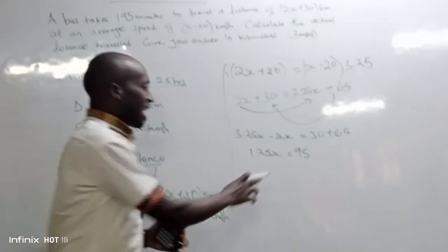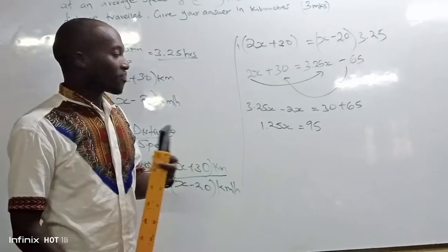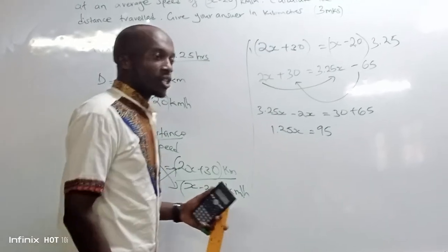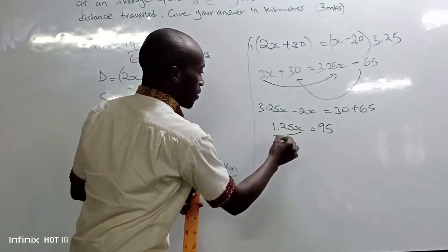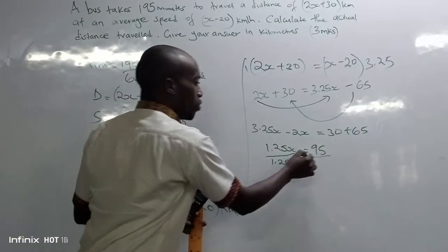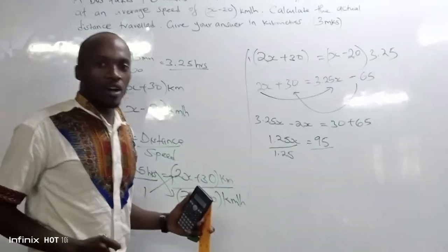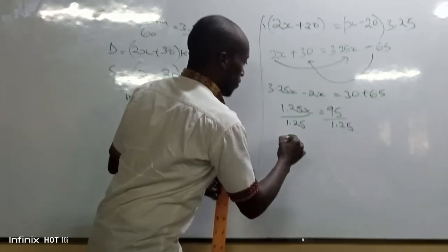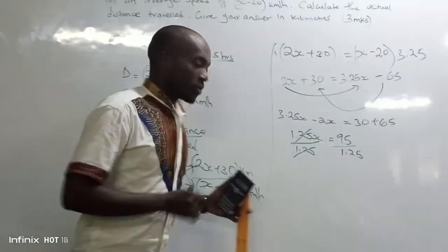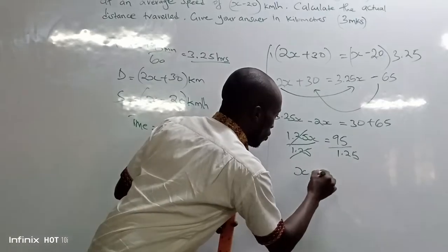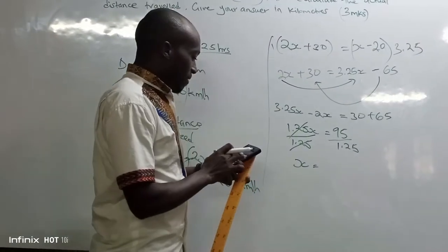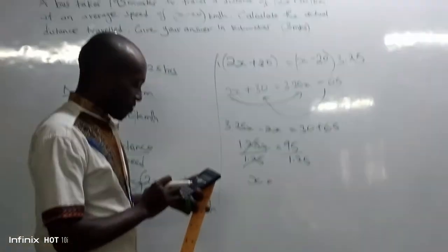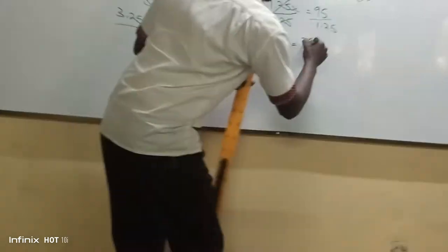To solve for x, since x has been multiplied by 1.25, we do the opposite and divide both sides by 1.25. So x equals 95 divided by 1.25, which gives us x equals 76.